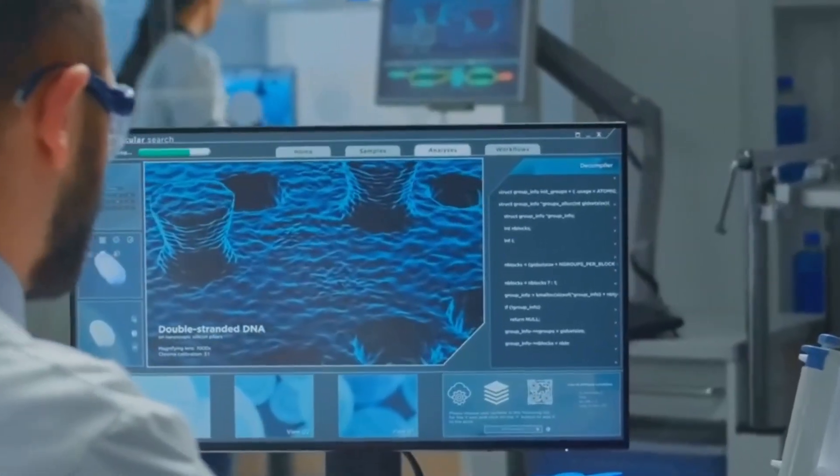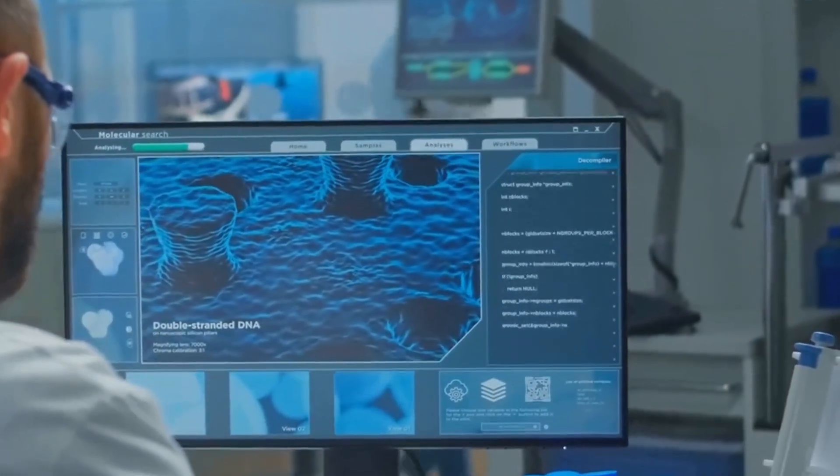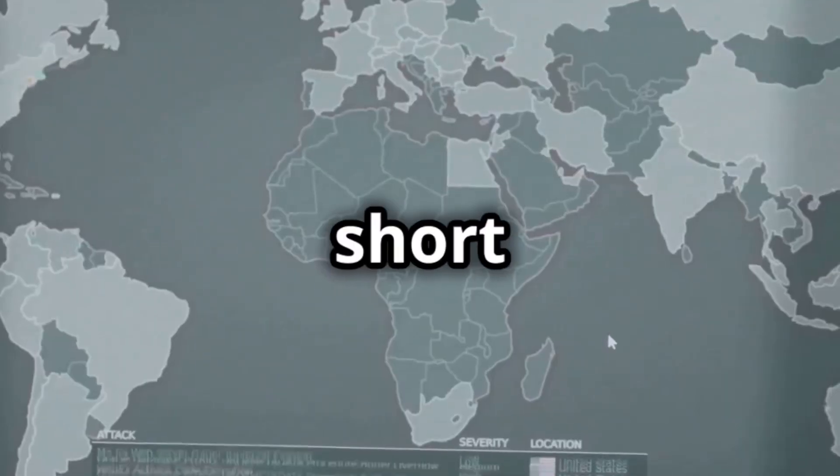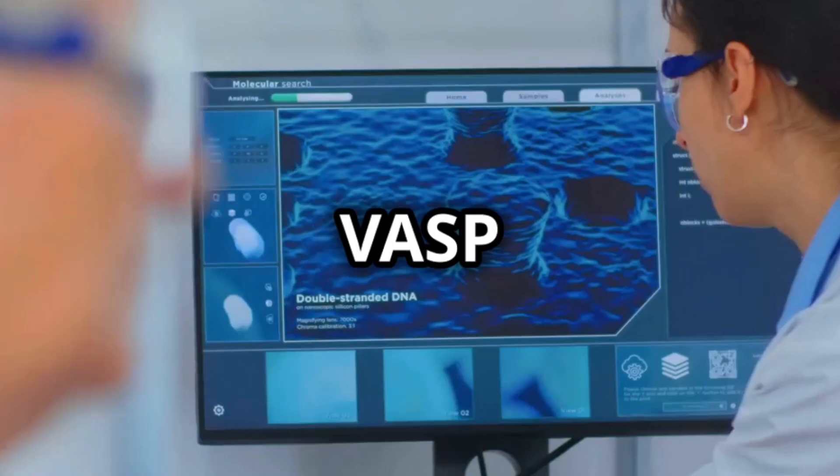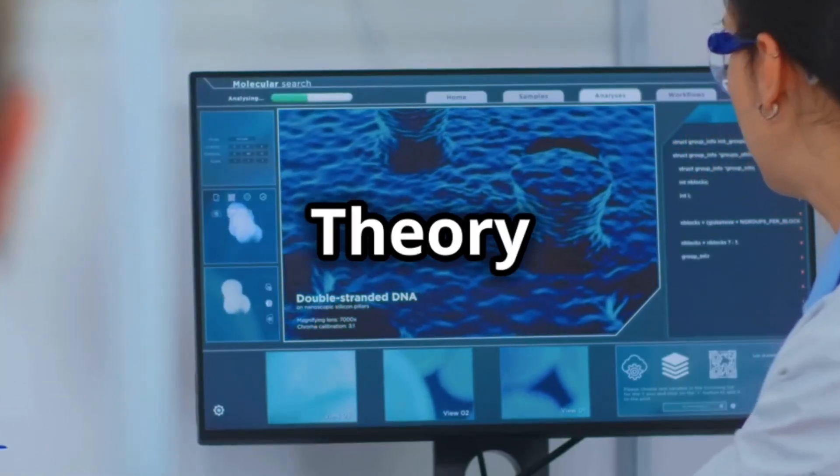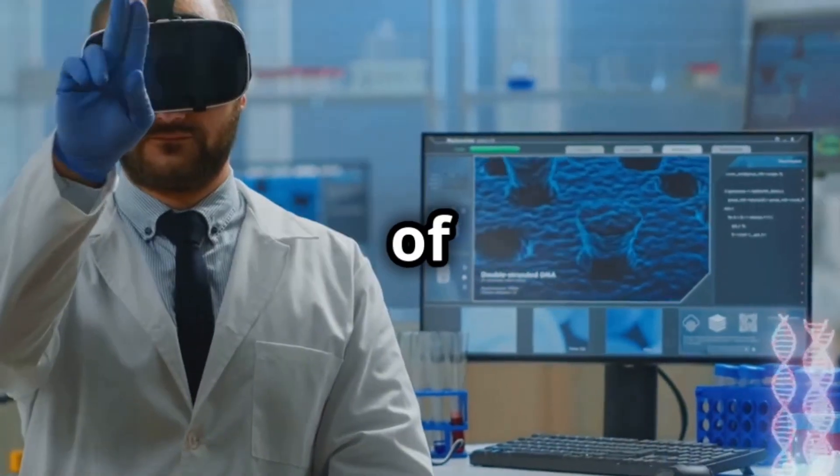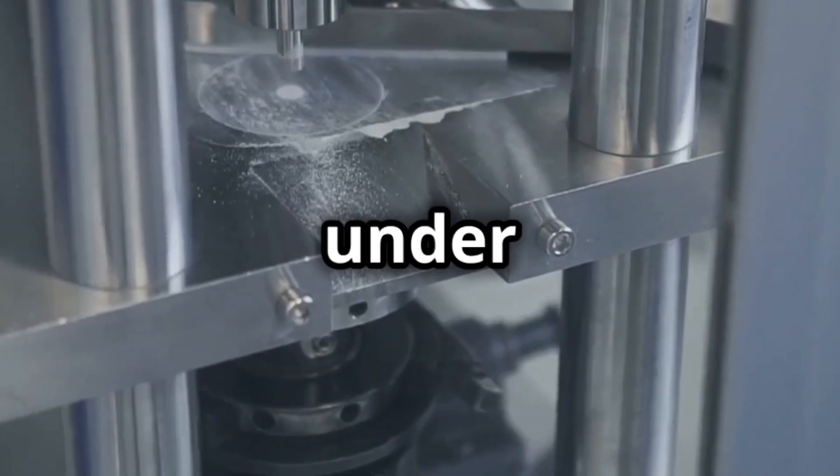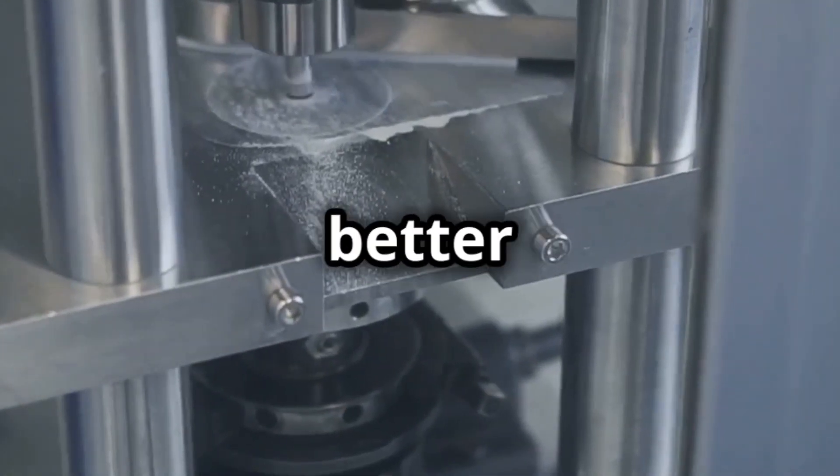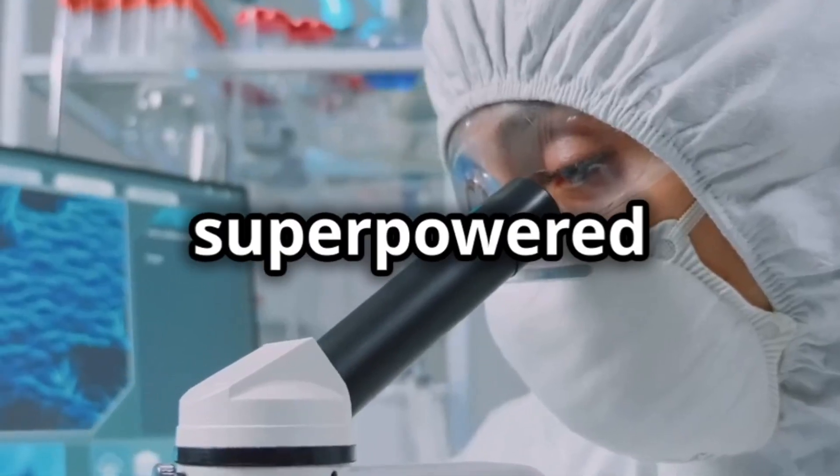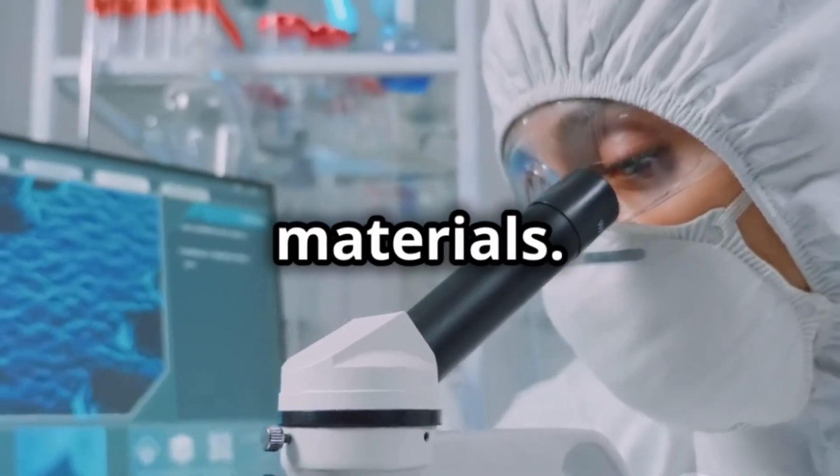Next we have VASP, short for Vienna Ab Initio Simulation Package. VASP uses density functional theory to simulate electron behavior within materials. It predicts properties of new materials, explores behavior under extreme conditions, and designs better catalysts. It's like having a super-powered microscope for the world of materials.